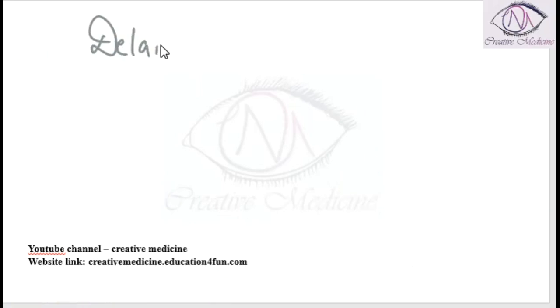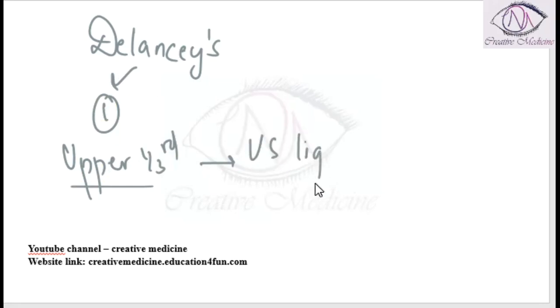According to DeLancey's levels of support, there are three levels. Level 1 includes the upper one-third of the vagina. The structures supporting Level 1, or the upper one-third of the vagina, include the utero-sacral ligament and cardinal ligament.